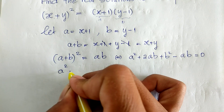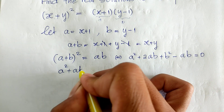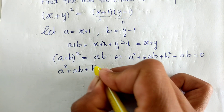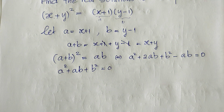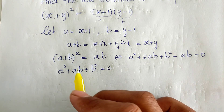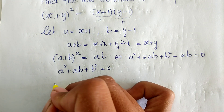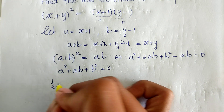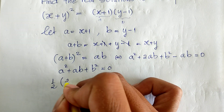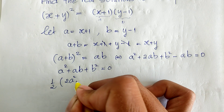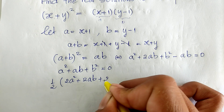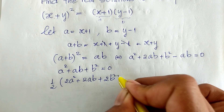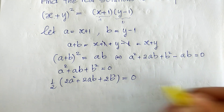This gives us a squared plus ab plus b squared equals zero. Now multiply through by 2: we get 2a squared plus 2ab plus 2b squared equals zero.